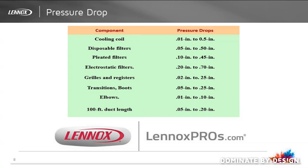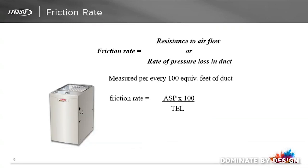If you want to know where to find the pressure drop for various pieces of Lenox equipment, simply go to LenoxPros.com and search in the document library for the engineering handbooks. It is in these documents where you will find this information. Now we're going to look at the friction rate formula. The actual friction rate equals the available static pressure, or ASP, times 100, divided by the total equivalent length, or TEL.